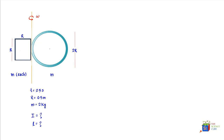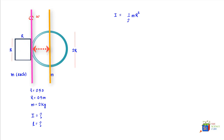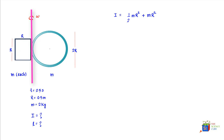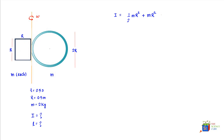For the hoop, if the rotation axis passed through its center, the moment of inertia would be (1/2)mr² from standard tables. Since the axis has been shifted by a distance h = r, we apply the parallel axis theorem — adding m·r² — giving us I_hoop = (3/2)mr².